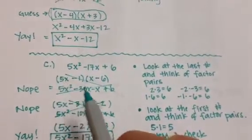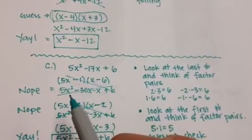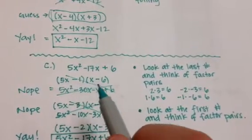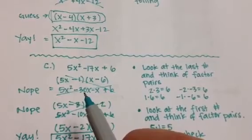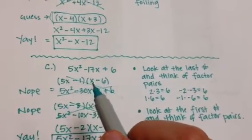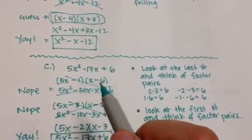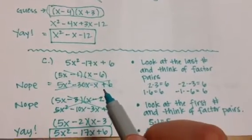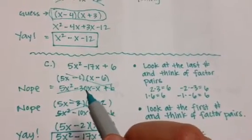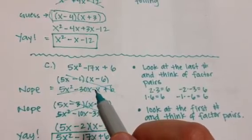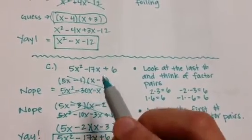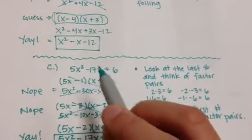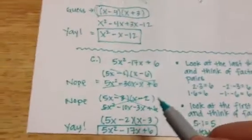So I know 5x times x gives me 5x squared. 5x times negative 6 gives me negative 30. Negative 1 times negative x gives me negative x. And negative 1 times negative 6 gives me 6. Now I can tell already that this didn't work, because negative 30 minus 1 is going to be a negative 31x, but that doesn't match up with my negative 17 in the middle. So then I guess again.